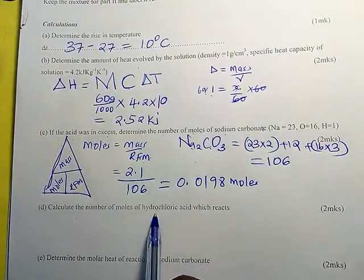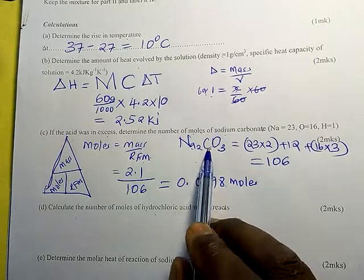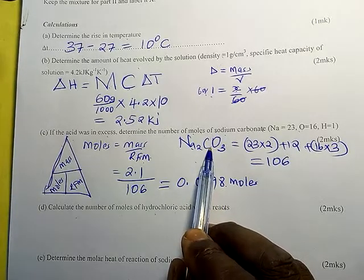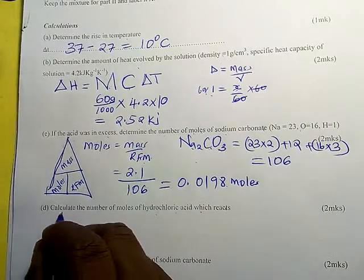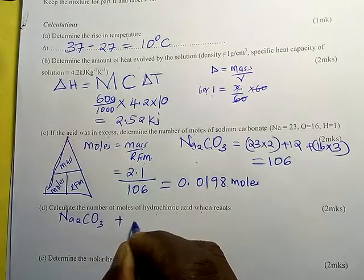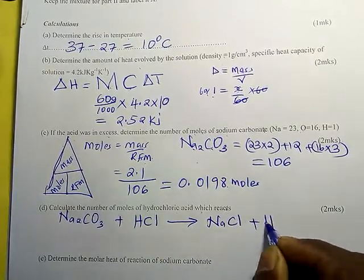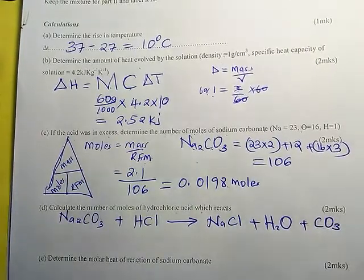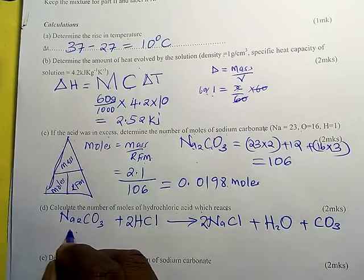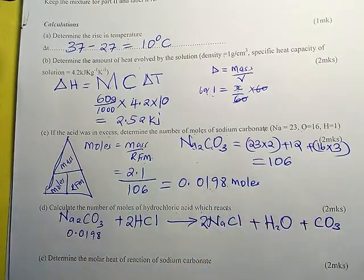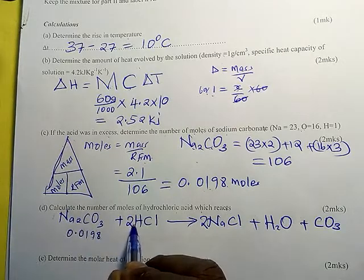Now calculate the number of moles of hydrochloric acid which reacted. We have 0.0198 moles of sodium carbonate that reacted with 60 cm³ of HCl. We write and balance the equation: Na₂CO₃ + 2HCl → 2NaCl + H₂O + CO₂. The mole ratio of Na₂CO₃ to HCl is 1:2.